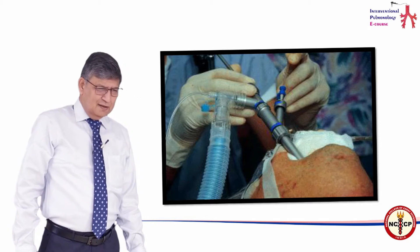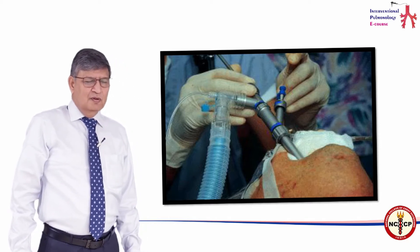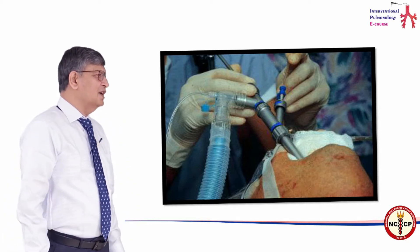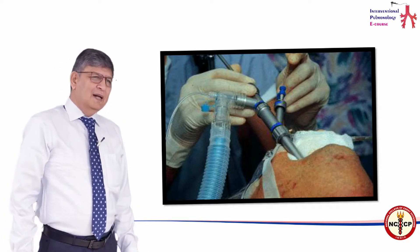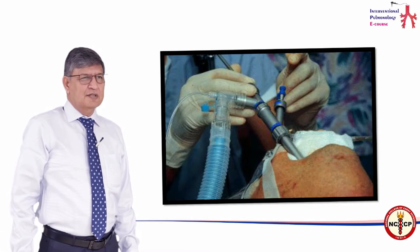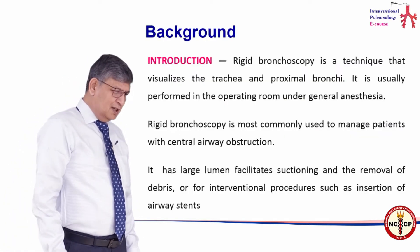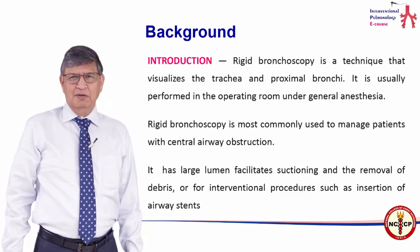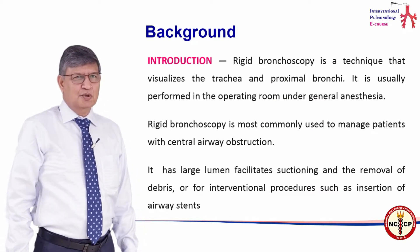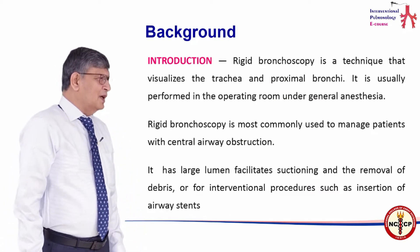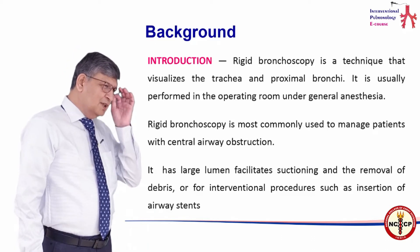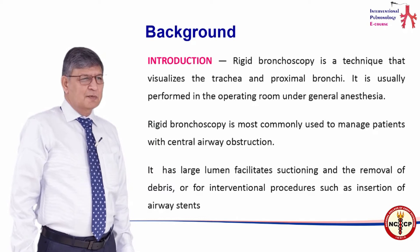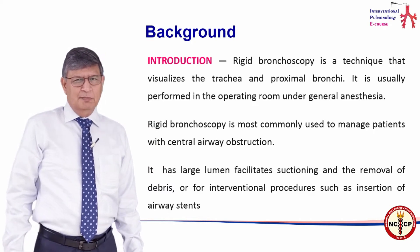Now, what exactly is it? It is just a hollow tube with a telescope going through that and you are going to visualize the trachea and the proximal bronchi and it is usually done under general anesthesia. I have seen it being done under local anesthesia and conscious sedation, but it is extremely uncomfortable and I do not think you should be doing that at all. This is one of the most important modalities to manage patients with anything in the central airway obstruction, central airway meaning the trachea and the main bronchi.